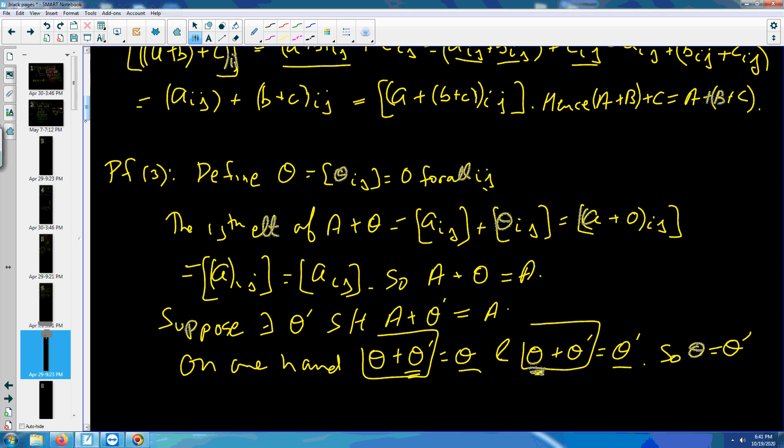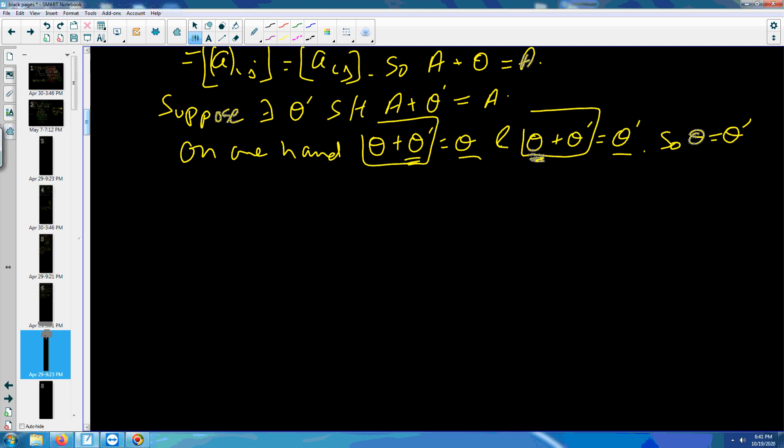Now, we want to talk about inverses. Let A be, so this is proof of four. Let A be an m by n matrix. I claim there exists a matrix D, m by n, such that A plus D is this zero matrix.